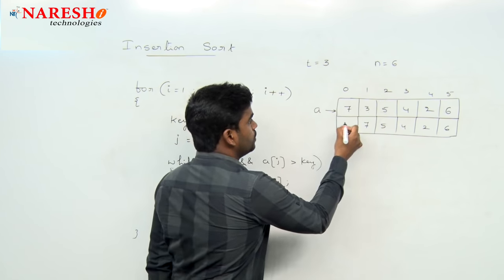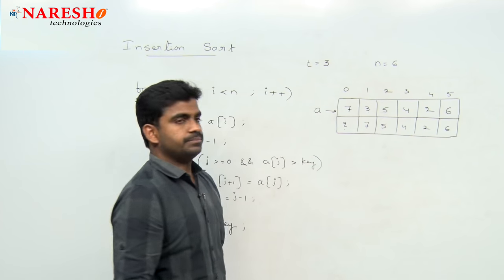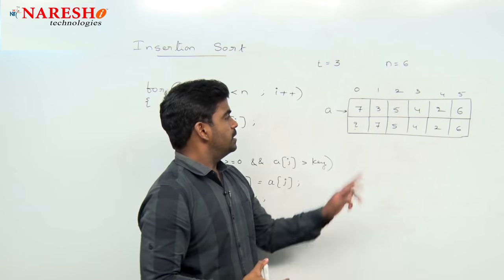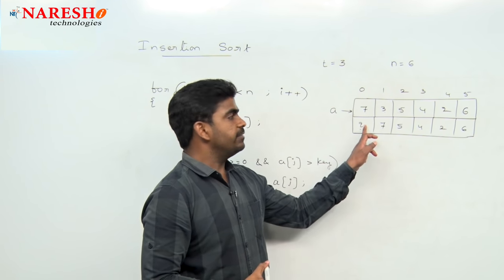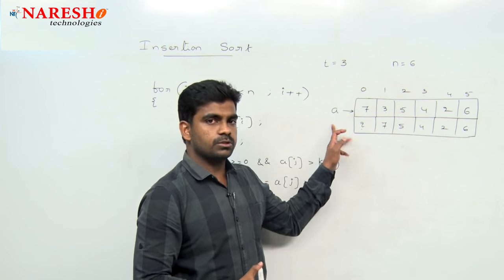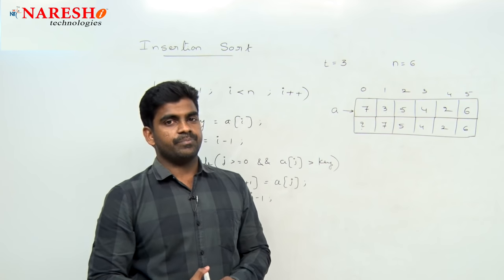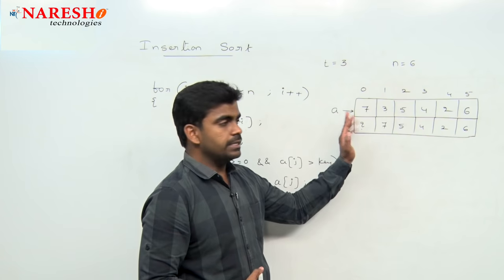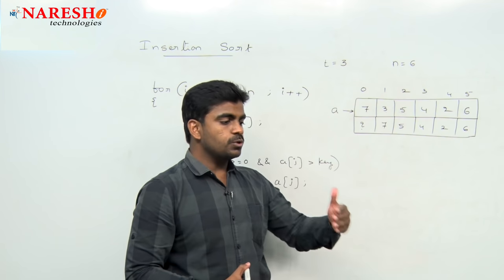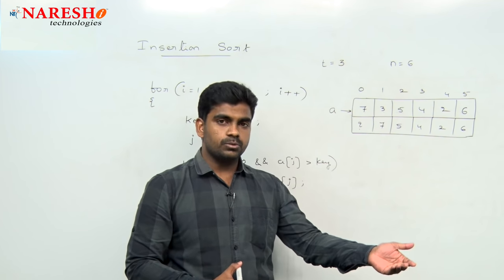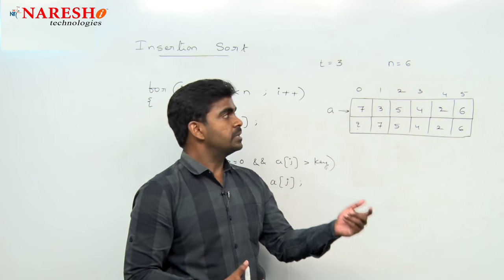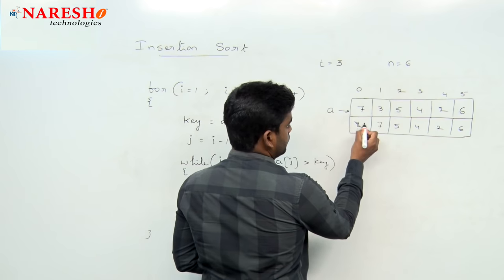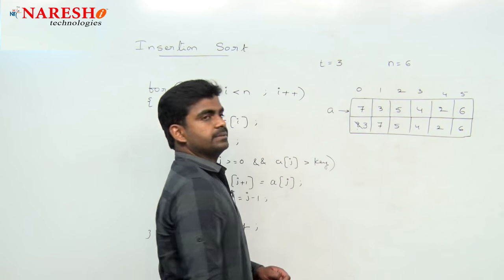Please do not place the temp value directly. Why? Because suppose if you place directly, you still need to compare with the previous elements. But as of now, the index is already 0 — there is no negative indexing, so there are no more elements to check. That is why the temporary element value will go and store here.